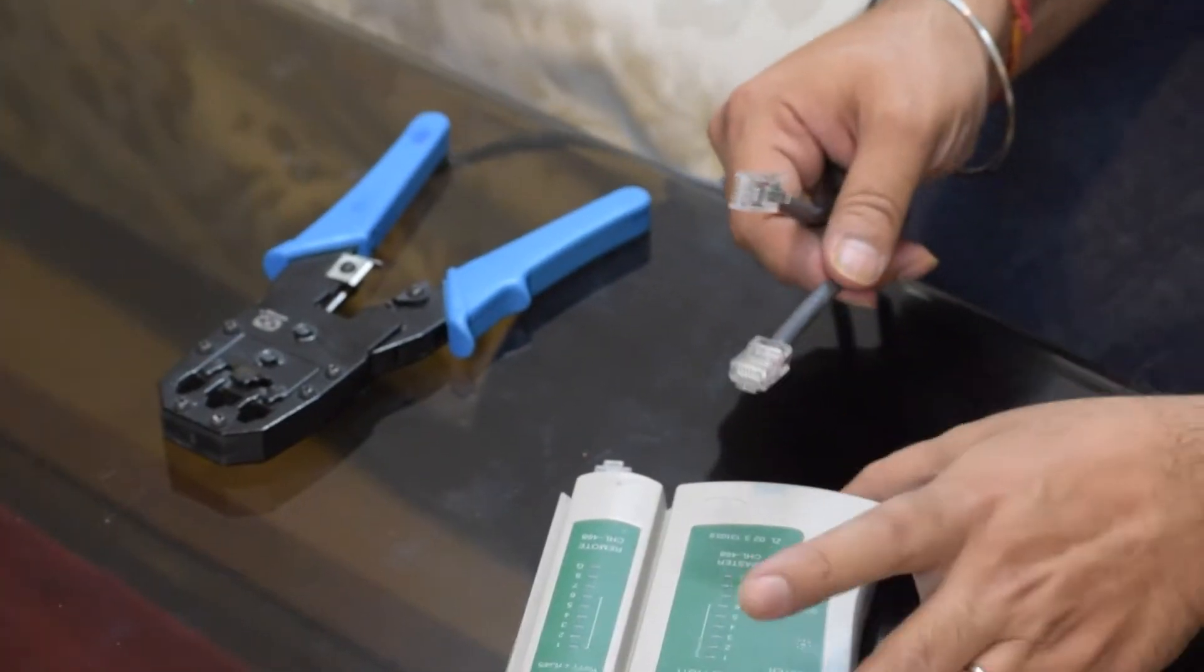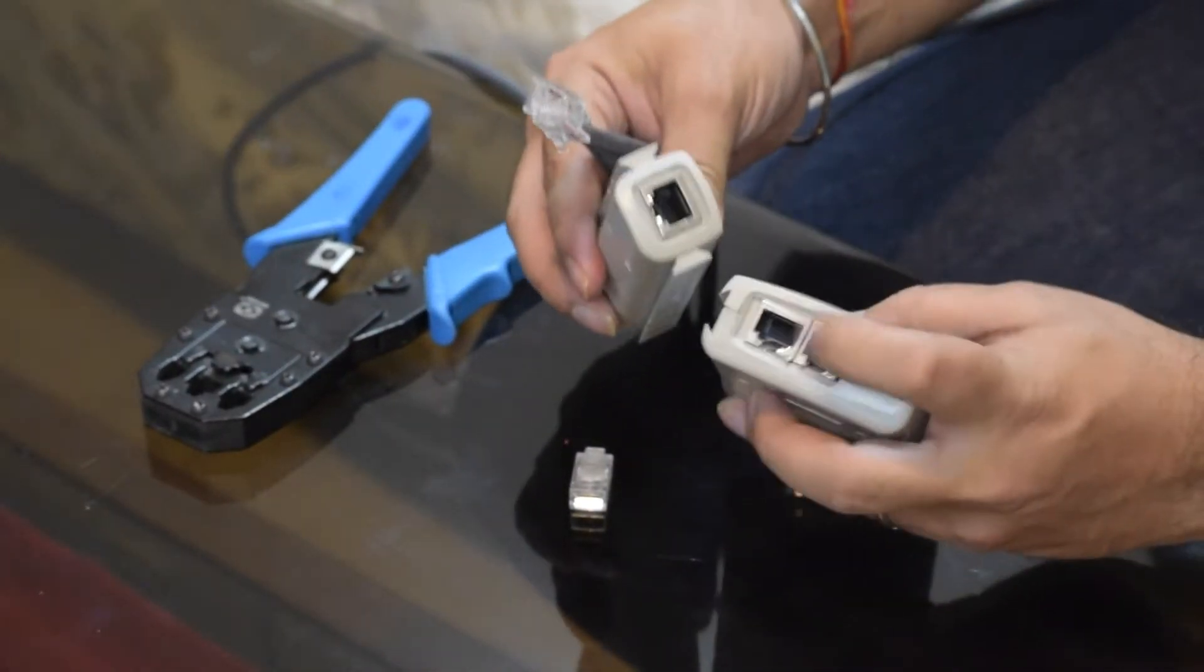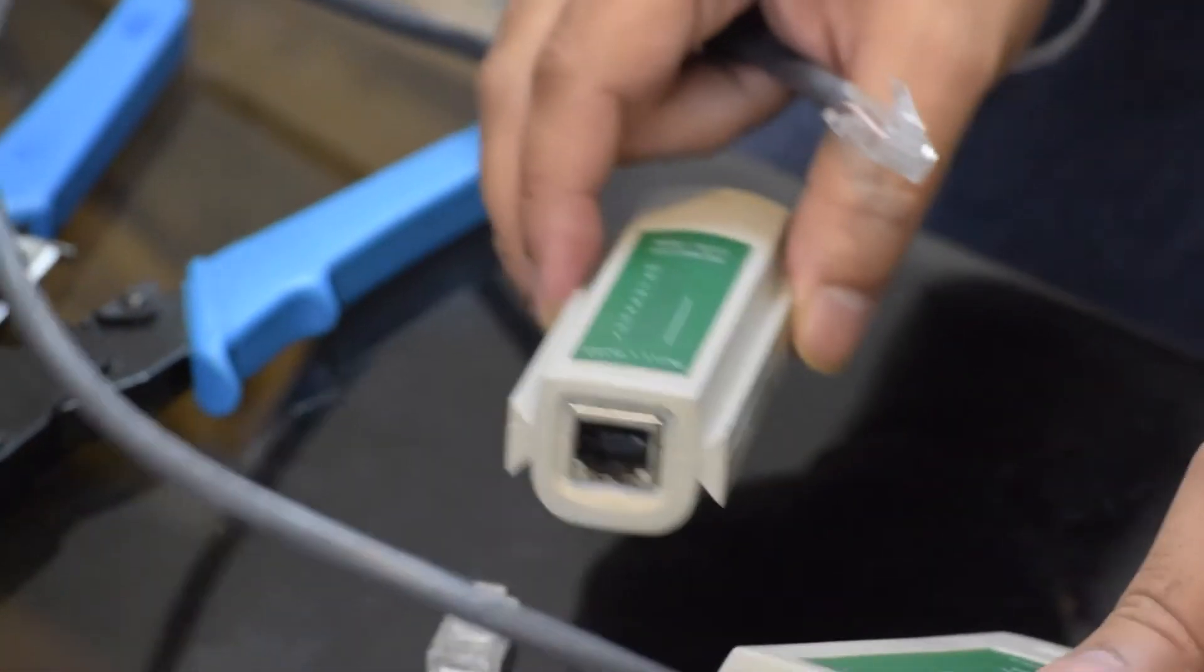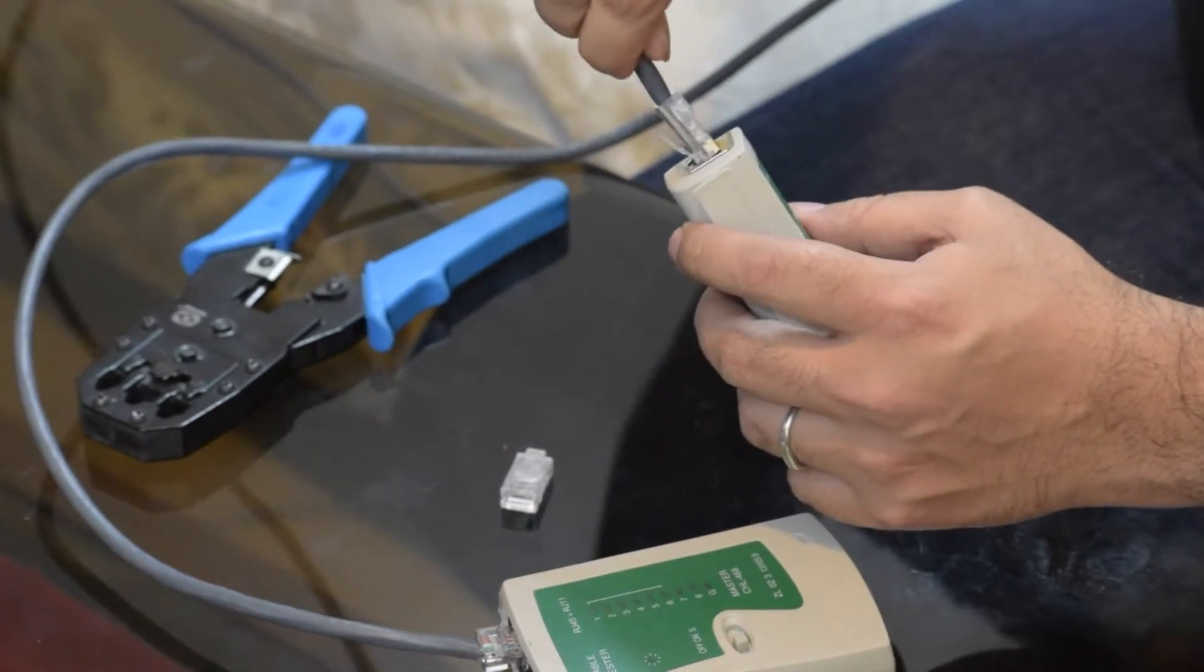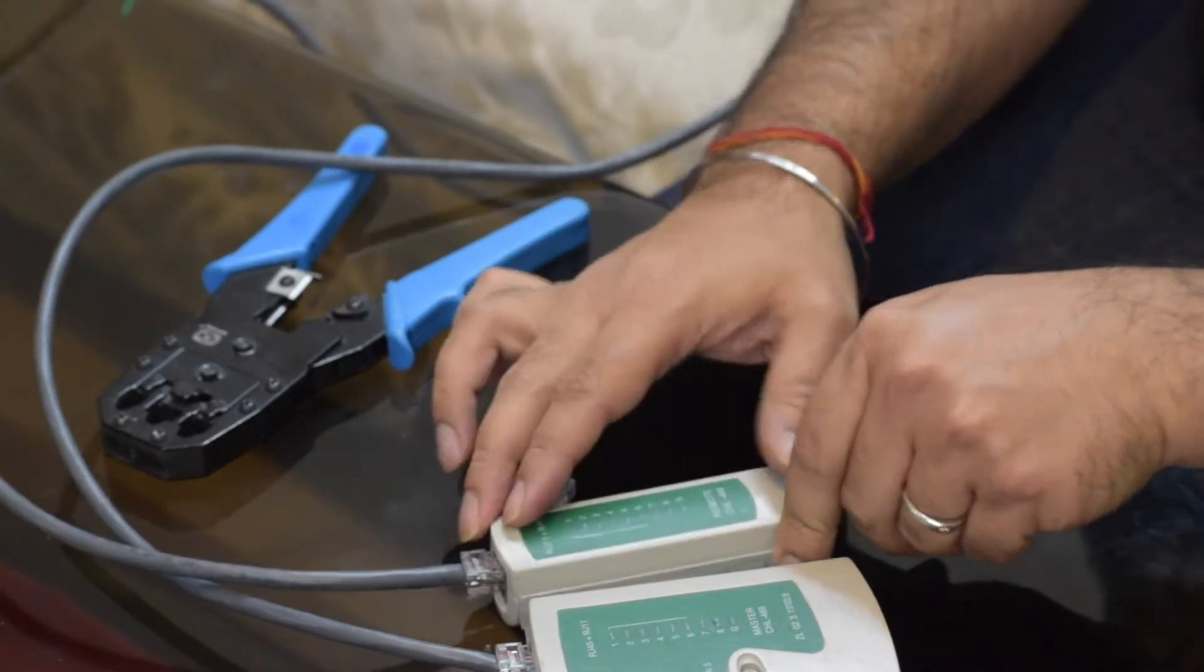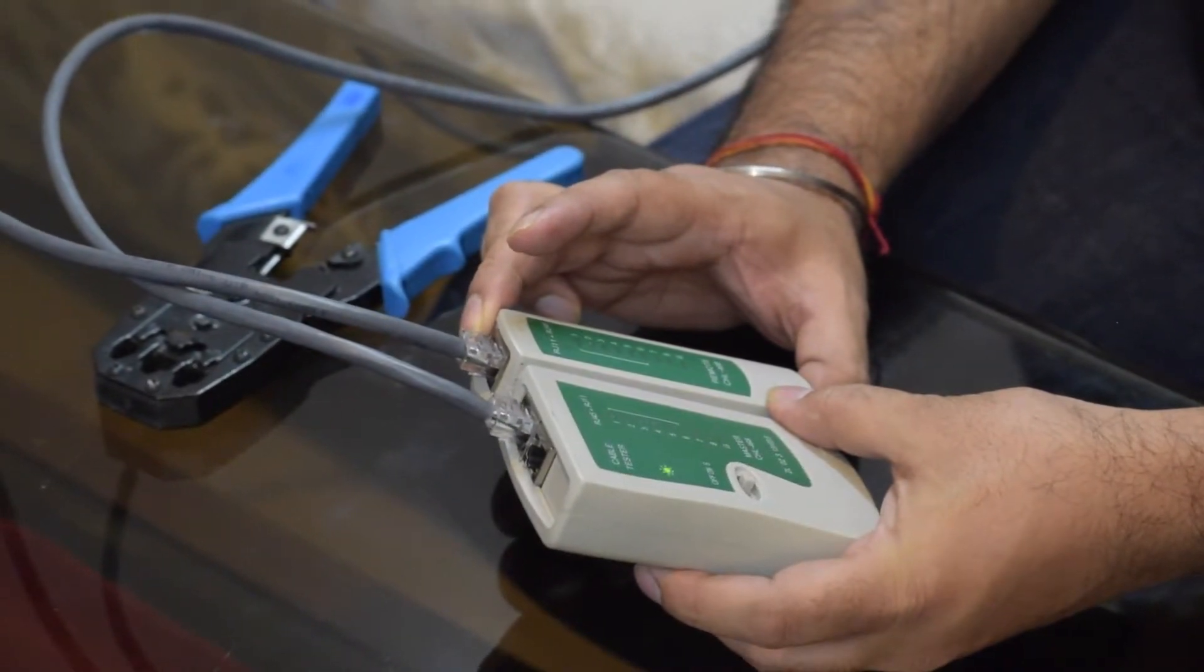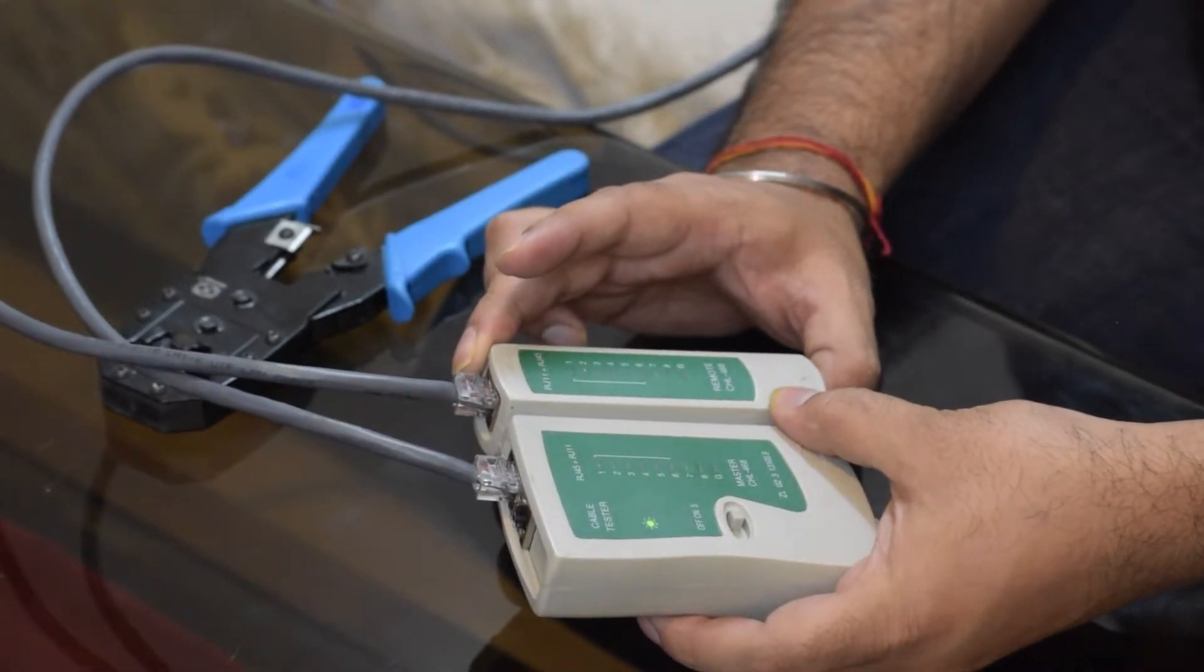And for a cable tester, this is a type where you can detach and you've got RJ45 ports on both ends. So you need to plug one end of the cable in the first part and the second end into the remote part like so. And let's just turn it on. And let's see if it is working properly or not.